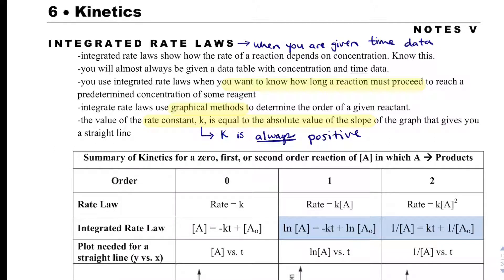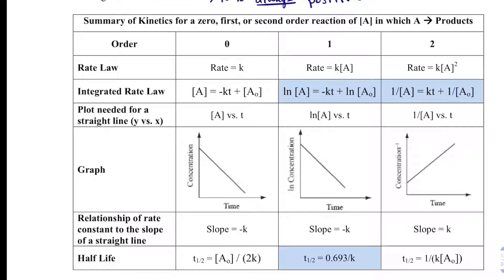The table here is a summary of zero, first, and second order reactions where we have some sort of reactant A. We will see that on our AP formula sheet — they will use A as some sort of reactant, so don't be thrown by that. With these orders — zero, first, and second — we can write generic rate laws, and from that we could graph concentration versus time.